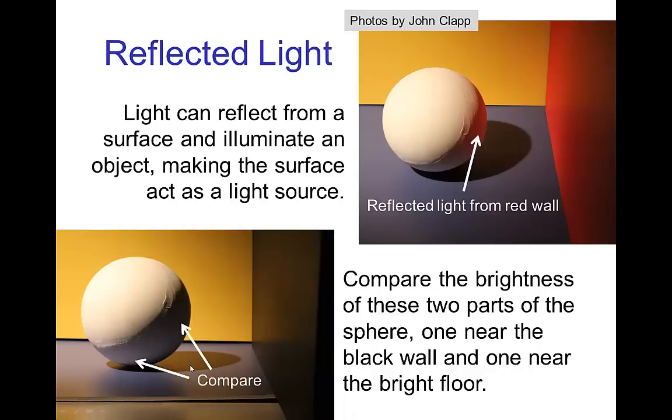And you see that not only is the lower part of the sphere illuminated with reflected light from the blue floor, but the part closest to the black wall is not illuminated at all, and that's the darkest part of the sphere.